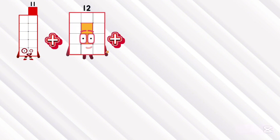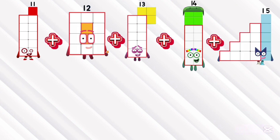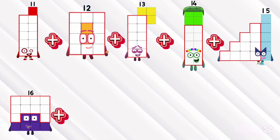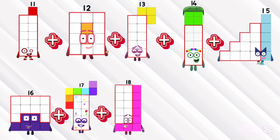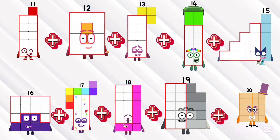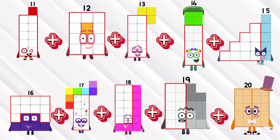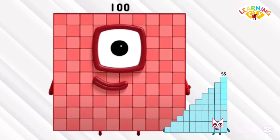11 plus 12 plus 13 plus 14 plus 15 plus 16 plus 17 plus 18 plus 19 plus 20. The sum of these numbers is 155.